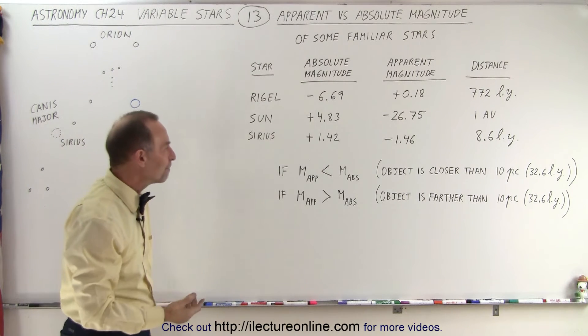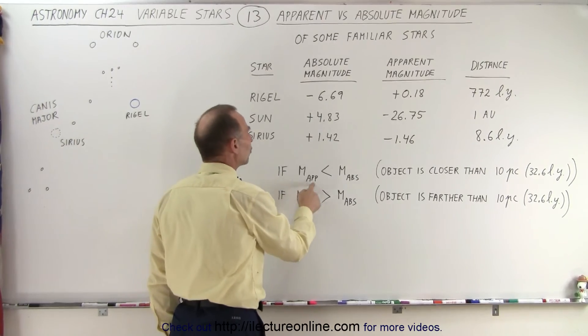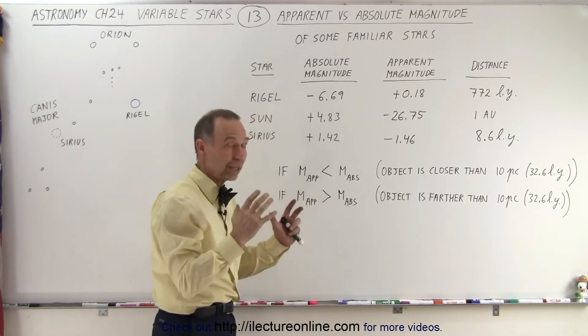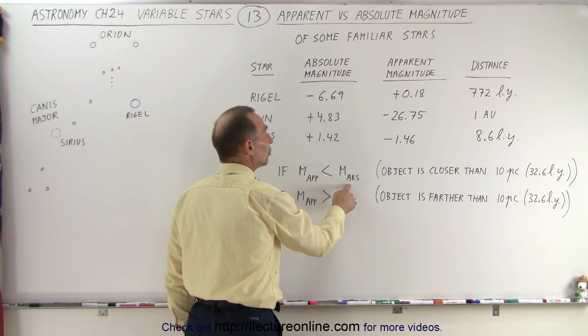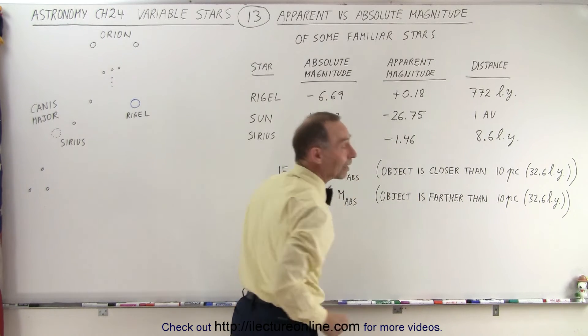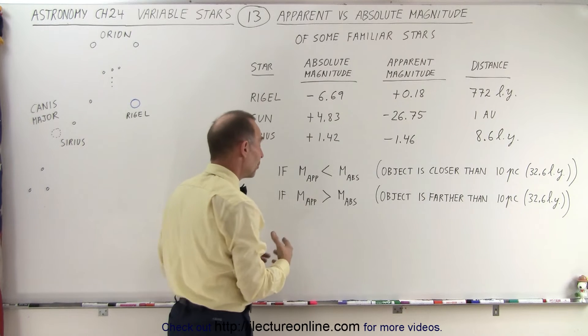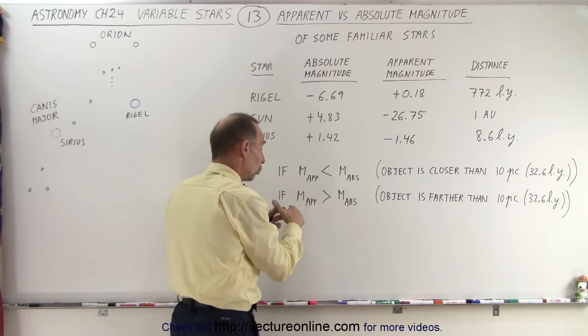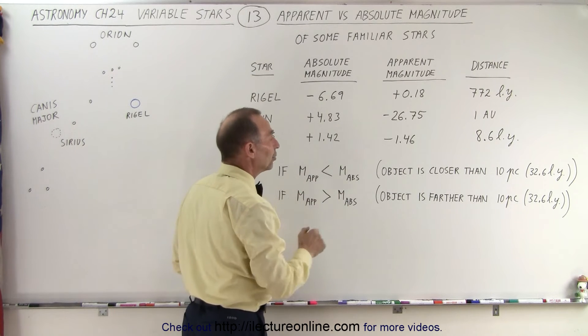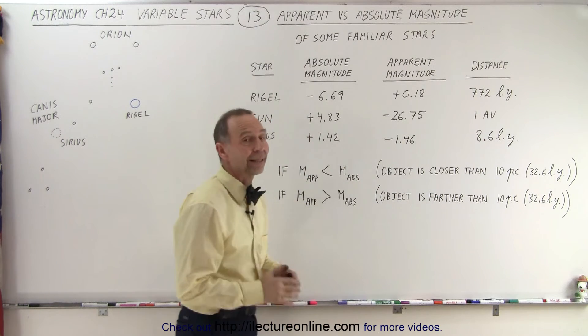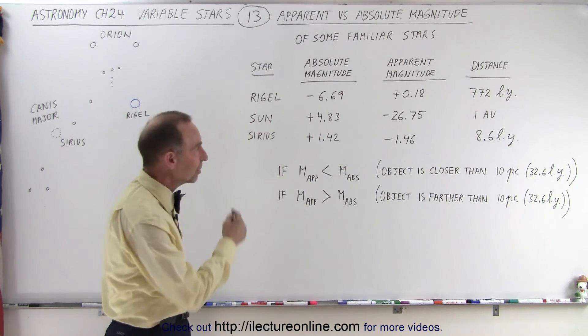So we can say that if the apparent magnitude is smaller, meaning brighter, than the absolute magnitude, the object is closer than 10 parsecs. If the apparent magnitude, the brightness, is greater than or dimmer than the absolute magnitude, then the object is farther away than 10 parsecs. So let's try it on these examples.